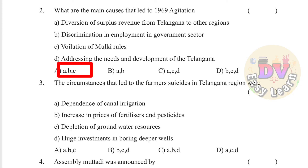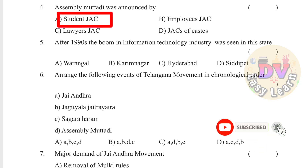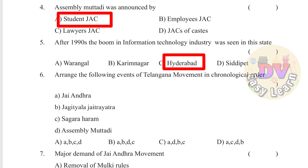Question 3: The circumstances that led to farmers' suicides in Telangana region were: increase in prices of fertilizers and pesticides; depletion of groundwater resources; and huge investments in boring deeper wells. Question 4: Assembly Muttari was announced by. Question 5: After the 1990s, the boom in the Information Technology industry was seen in this city — Answer: Hyderabad.